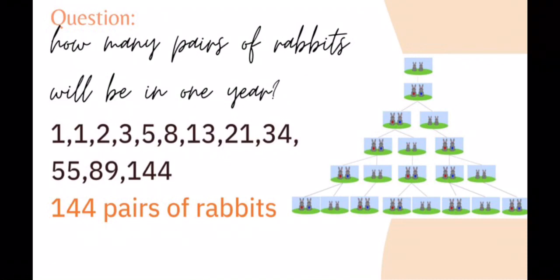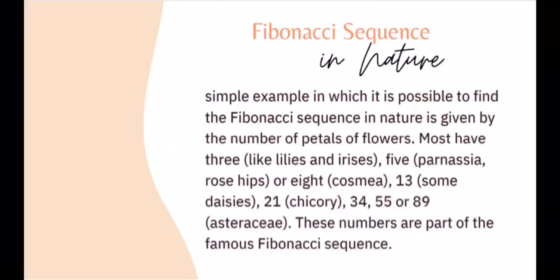How many pairs of rabbits will there be in one year? Using the pattern 1, 1, 2, 3, 5, 8, 13, 21, 34, 55, 89, and 144 — and the simple rule that you add the last two terms to get the next term — there will be 144 pairs of rabbits at the end of the year.